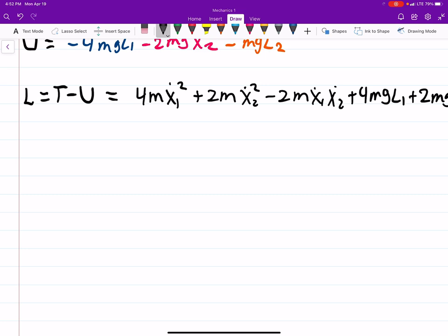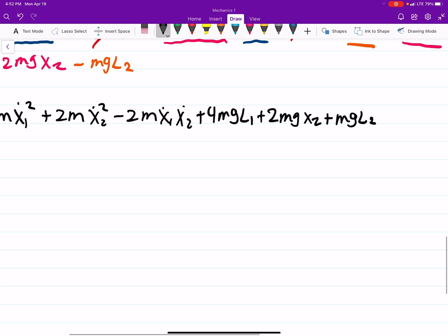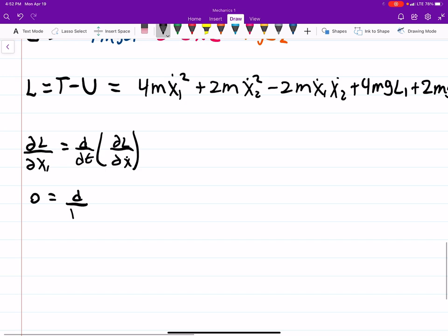So the Euler-Lagrangian, we'll do it for just x1 I guess to start since that's what we're looking for. dL by dx1 is d by dt partial of our Lagrangian with respect to x dot. So if we take the derivative of L which we just found with respect to x1, well it's not dependent on x1 as I'm looking at it I don't see x1. So then this term is 0 equals d by dt.